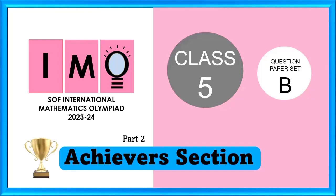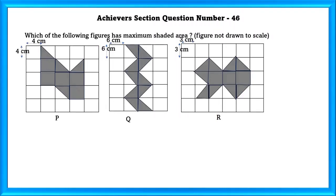Class 5 SOF IMO Set B Achievers Section. Achievers Section Question Number 46: Which of the following figures has maximum shaded area?